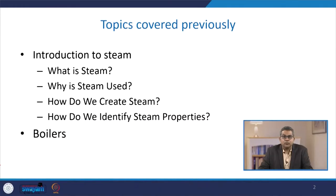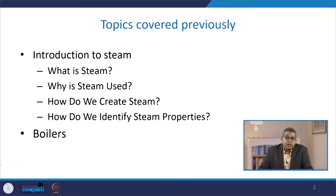Welcome to the new lecture on boilers under the edges of steam in chemical process safety. Before we discuss other aspects of the boiler, let us review what we studied in the previous lecture. We had the introduction of steam, its importance, what steam is, why it is used, how we create steam, the integral parts of a steam generation plant, how to identify steam properties, and we started the concept of boiler including its basic anatomy.